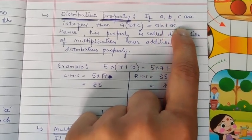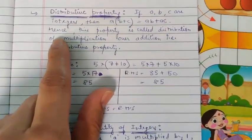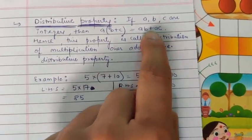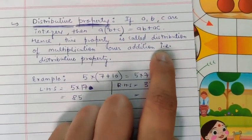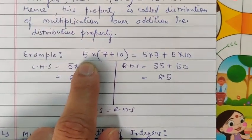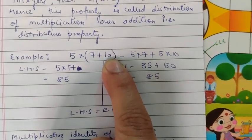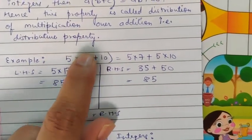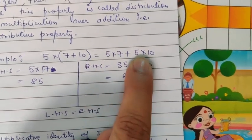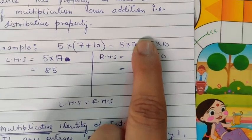You can see that a is multiplying b, then a is multiplying c. Hence this property is called distribution of multiplication over addition — over addition because we have used the plus sign. Let's look at an example: a = 5, b = 7, c = 10. Here 5 is distributing with 7 and 10, giving us 5 × 7 and 5 × 10.